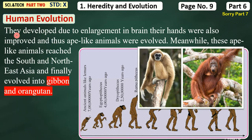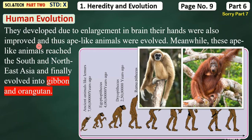These ancestors evolved. They developed due to enlargement in the brain — their cranial capacity increased — and their hands were also improved. Thus, ape-like animals evolved. These ancestors were discovered today as lemures.